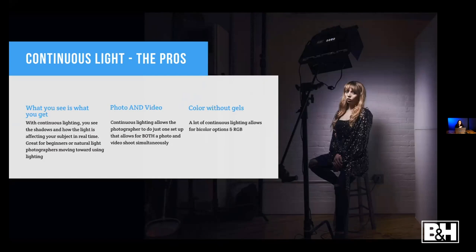Obviously we've already made the point that you can do both photo and video at the same time. But even if you're just a natural light photographer who's used to seeing what the sun is doing and having your model change positions, you could start playing with being able to shape light the way you want it, direct the light the way you want, instead of relying on your atmosphere. You can control the lighting but still see what it's doing — and that transition is actually a lot easier to make.